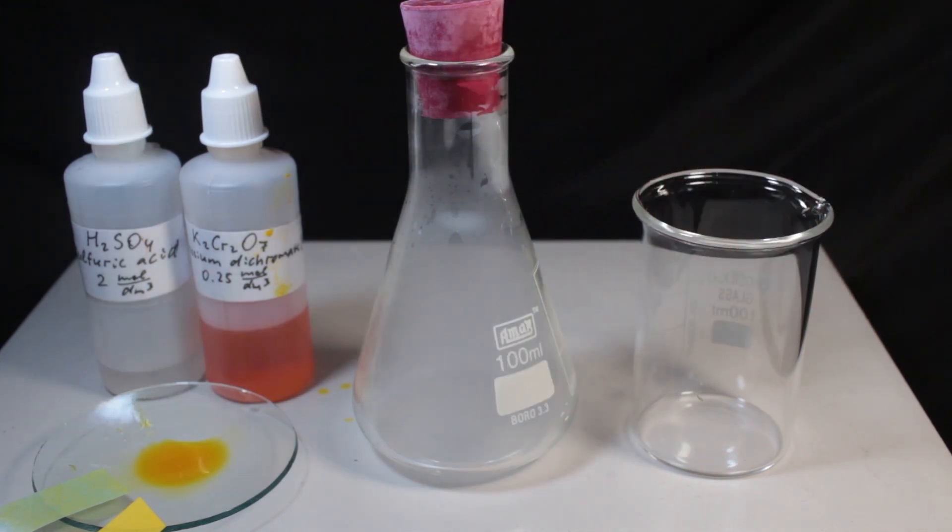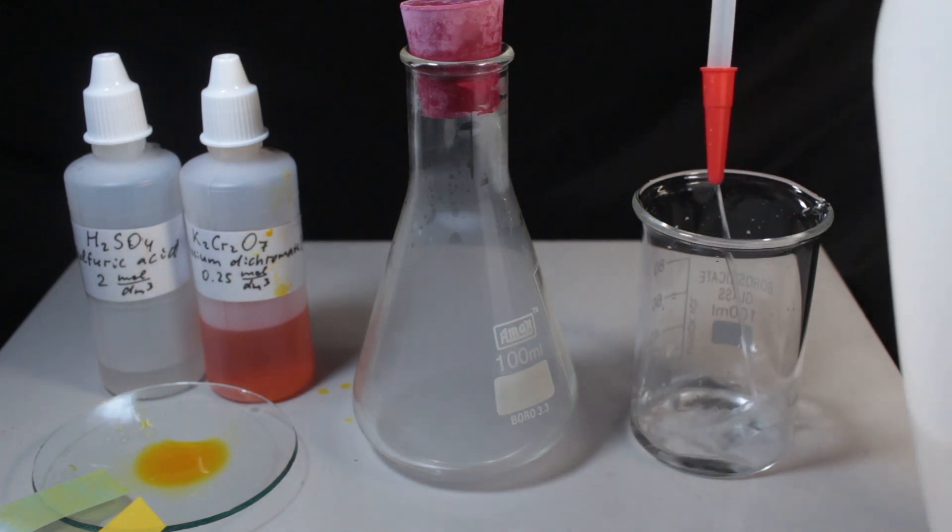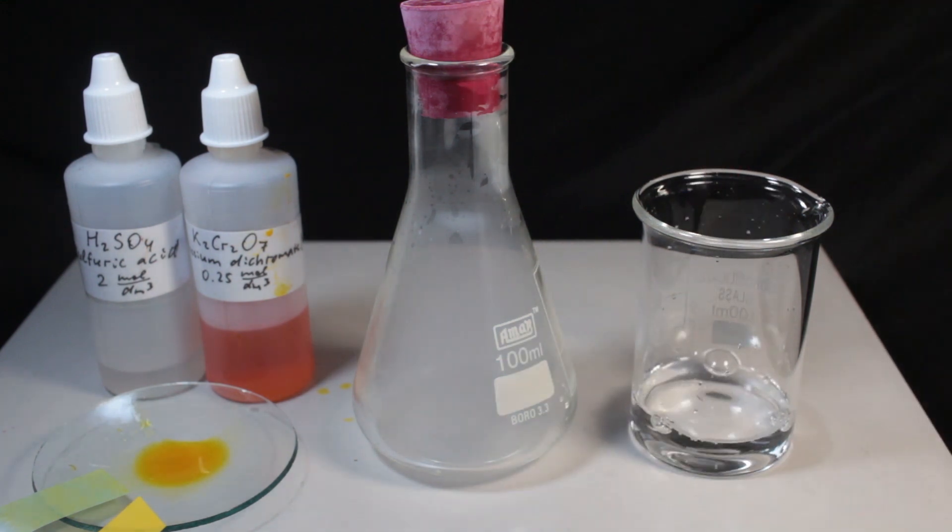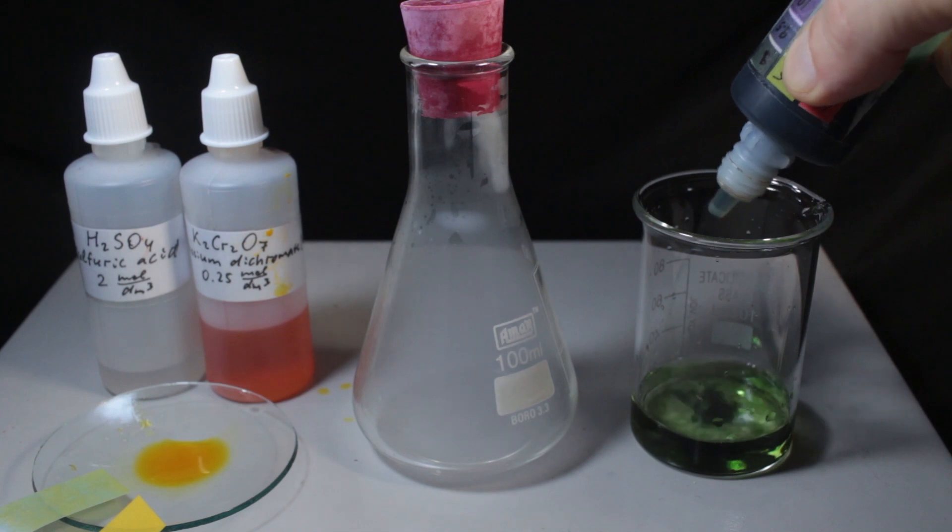And now for another property. Acidic properties. We say that sulfur dioxide is an acidic gas. Let's check it with water. Clear distilled water with universal indicator on it.